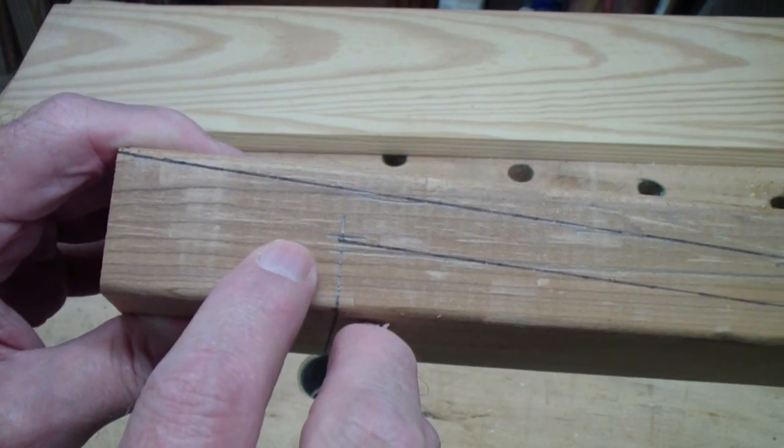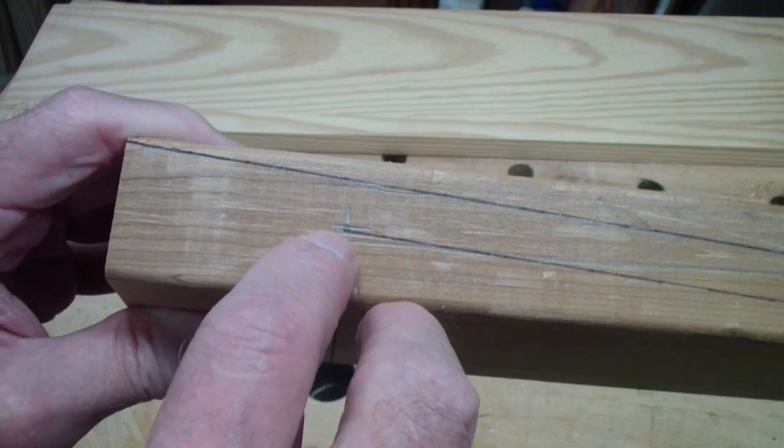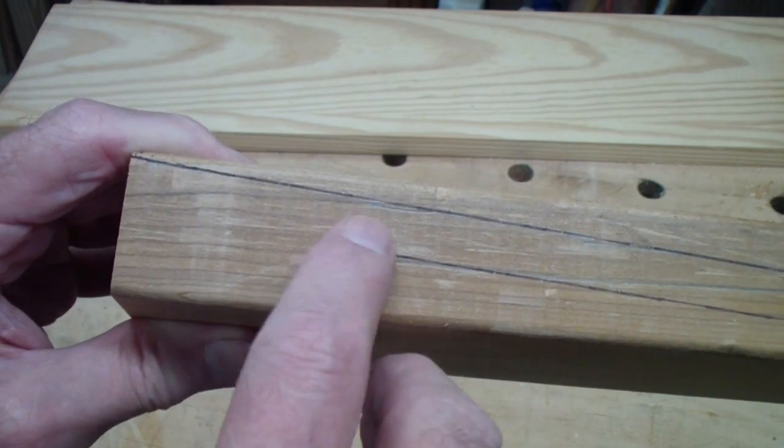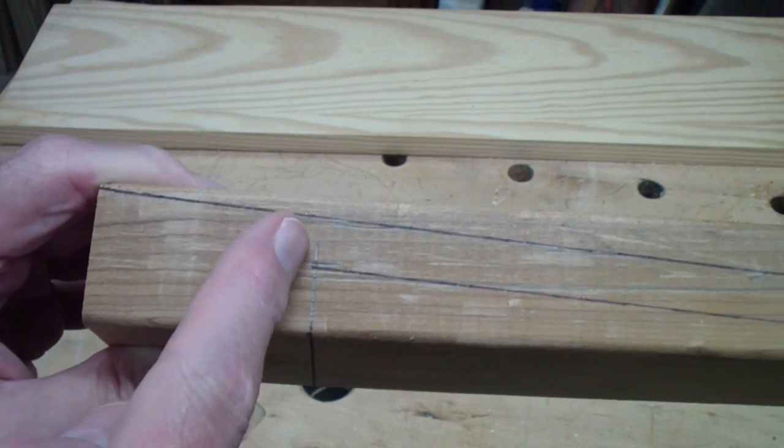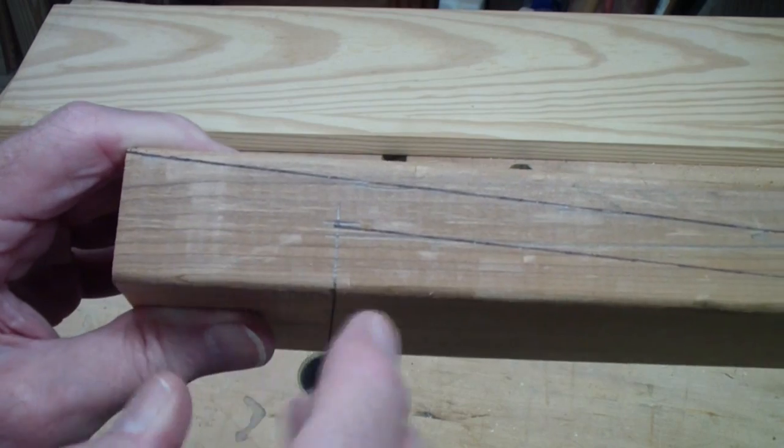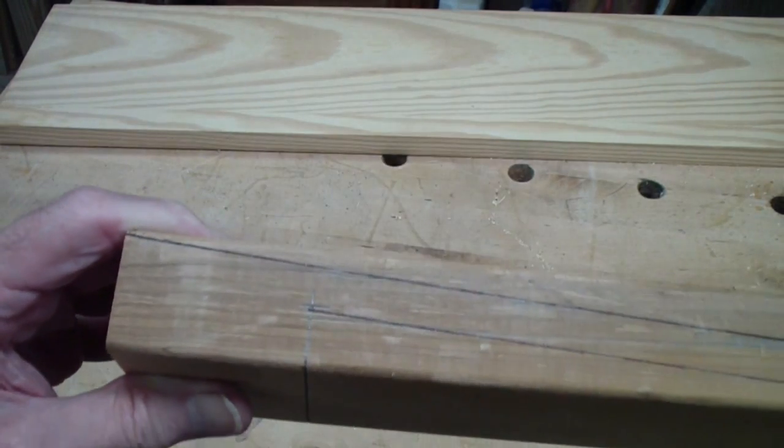Well, glue is stronger than wood, at least the modern aliphatic resin glues. So it occurred to me that why build it this way? Why not take a piece of wood, cut a slight angle on a piece of that wood, and just glue it. In other words, let me show you with another piece of wood over here.